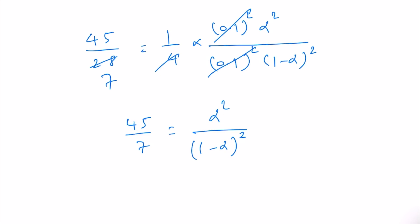45 by 7 will be 6.428. So if we take the square root of that, then we can write it as alpha divided by 1 minus alpha. Square root of 6.428 will be 2.535. So that will be 2.535 equal to alpha by 1 minus alpha.